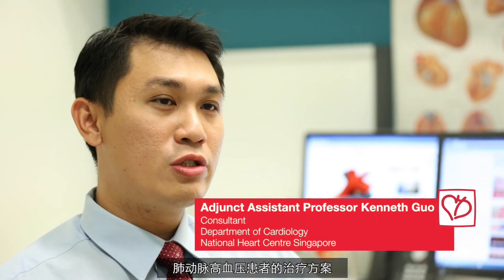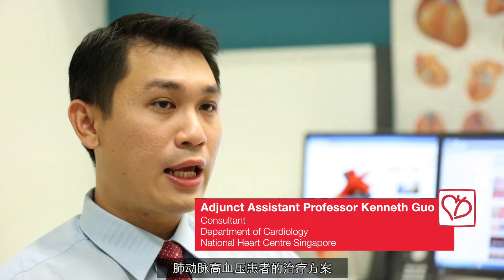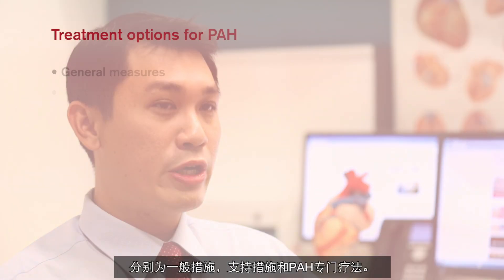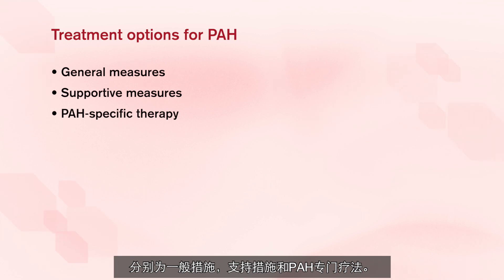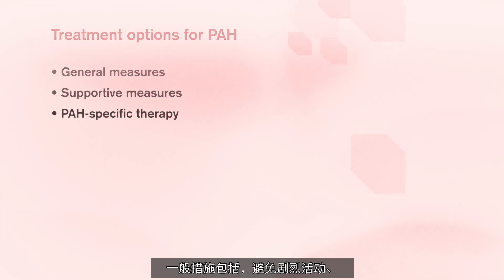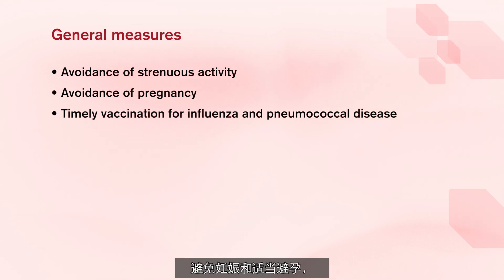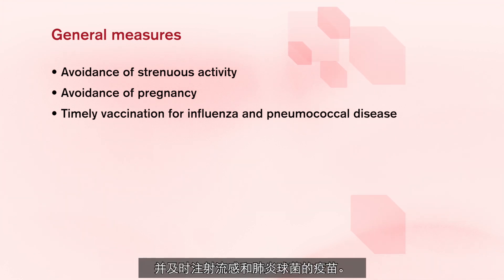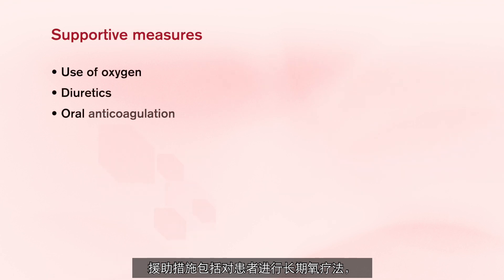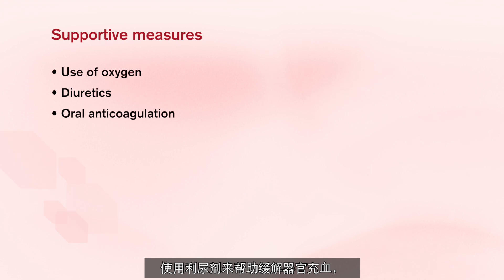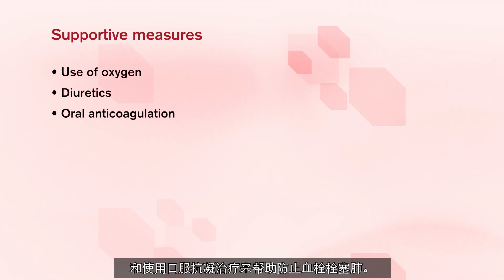The treatment options for patients with pulmonary arterial hypertension can be broadly categorised into three main groups: general measures, supportive measures, and PAH-specific therapy. General measures include the avoidance of strenuous activities, avoidance of pregnancy through careful family planning and appropriate contraception, and timely vaccination for influenza and pneumococcus. Supportive measures include the use of oxygen for patients who require long-term oxygen therapy, diuretics to relieve organ congestion, and oral anticoagulation to help prevent thromboembolism to the lungs.